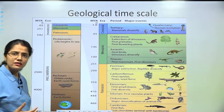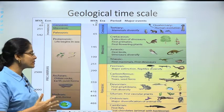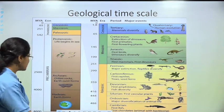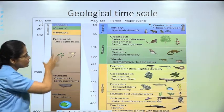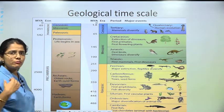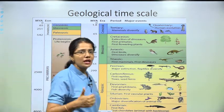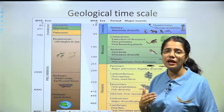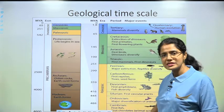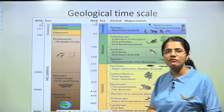To understand how life evolved, the history of earth has been divided into six eras. To understand the evolution of any organism, we first need to understand the geological time scale, and for that the history of the earth has been divided into six eras.